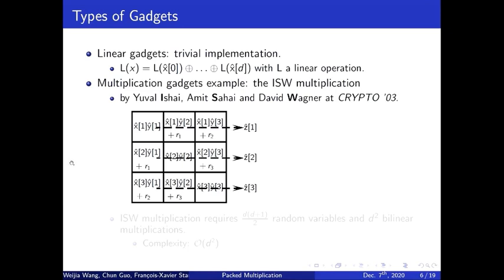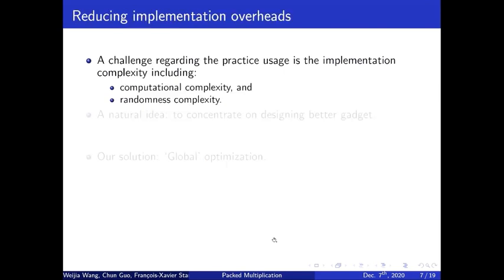We can say that the masking countermeasure constitutes some overhead. The overhead of linear operation is reasonable and seems hard to mitigate. The cost of the computation increases by a factor of the number of shares. But when it comes to the cost of multiplication, the computational cost of ISW multiplication increases by a factor of d squared, and it requires d squared bilinear multiplications. Besides, the multiplication also needs some uniformly distributed random variables, which is practically heavy to generate.